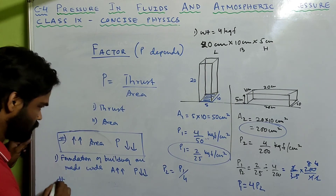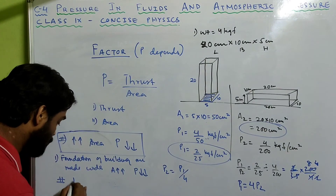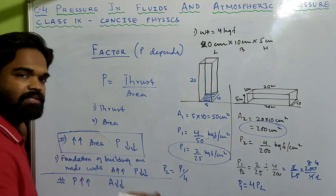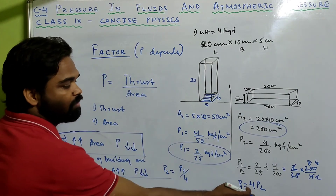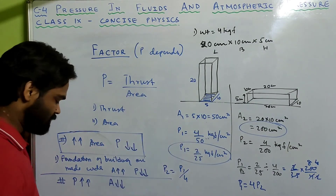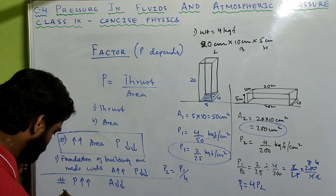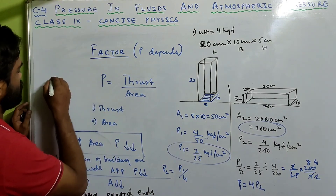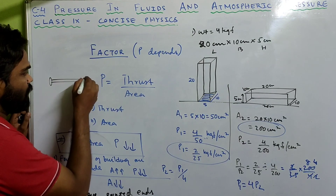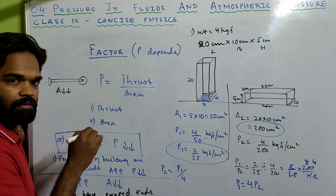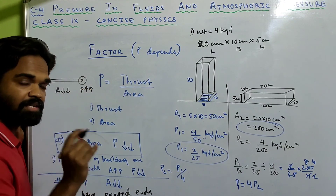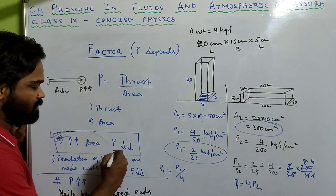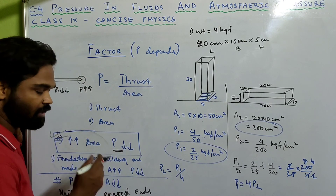So you can decrease pressure by increasing the area. Similarly, you can increase pressure by decreasing the area. If you decrease the area, the pressure will be more — that is why nails have pointed ends. When the end is pointed, the area decreases, so the pressure increases, meaning even with less effort the pressure will be more.